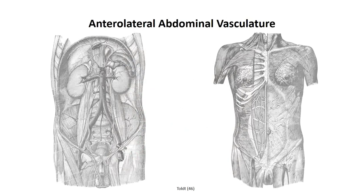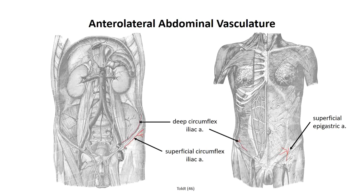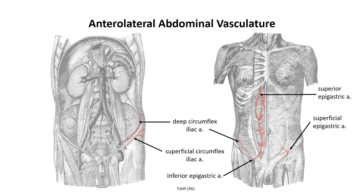The blood supply for the anterolateral abdominal wall is as follows. Superficially, the inferior portion of the wall is supplied by the superficial epigastric arteries medially and superficial circumflex iliac arteries laterally, both branching off the femoral artery just past the inguinal canal. The deep circumflex iliac arteries, branching from the external iliac artery, supply the supralateral aspects of the wall, anastomosing with descending branches off the intercostal arteries. The inferior epigastric arteries branch from the external iliacs, supplying the supramedial aspects of the wall, anastomosing with the superior epigastric vessels — a terminal branch of the internal thoracic artery. The other terminal branch is the musculophrenic artery, which supplies both the anterolateral thoracoabdominal wall and the anterior portion of the diaphragm.